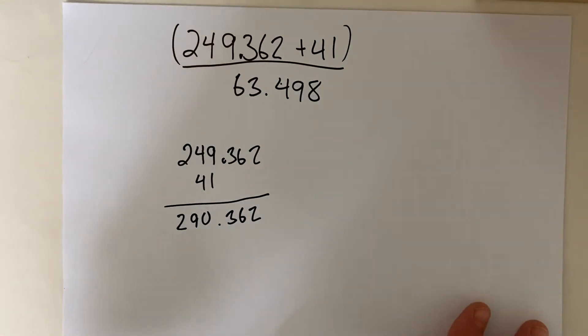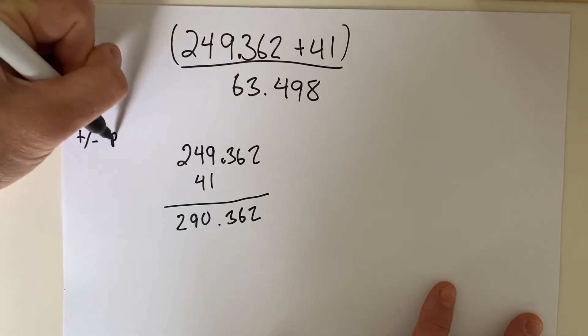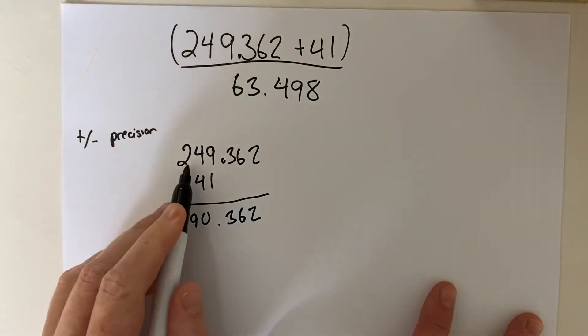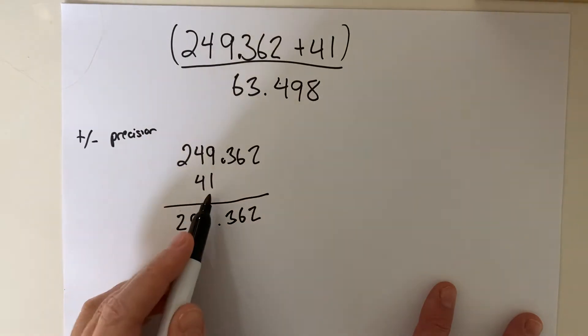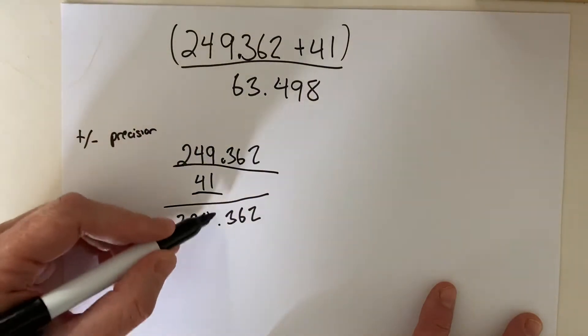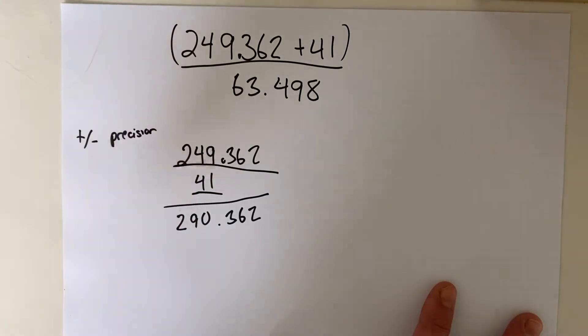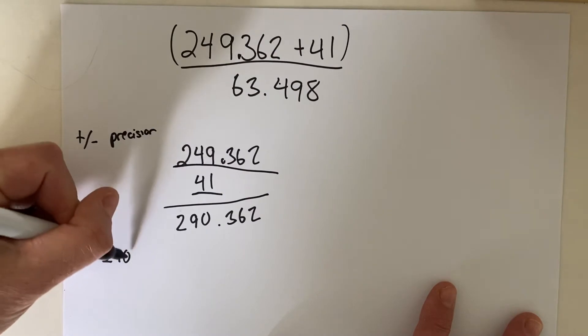But when you add, remember, adding and subtracting, you look at precision. So you knew this answer all the way to the tenths, hundredths, thousandths place, but this answer you only knew to which place? This would be the ones place. So when you added them up, your final answer you know to the ones place. Well, if I were to ask you how you'd represent 290 knowing it to the ones place, you would actually write 290 point.